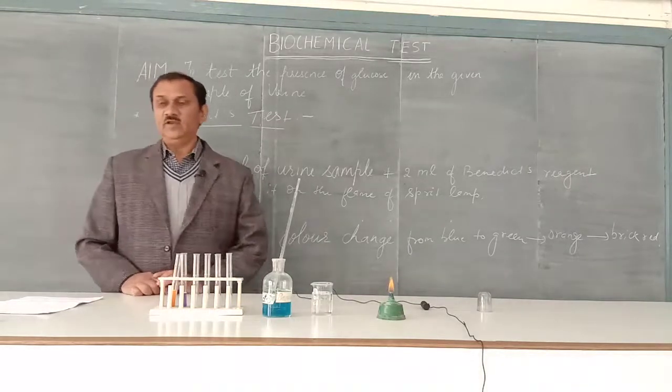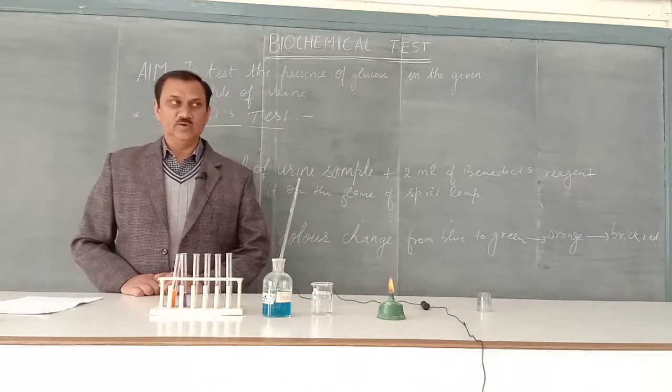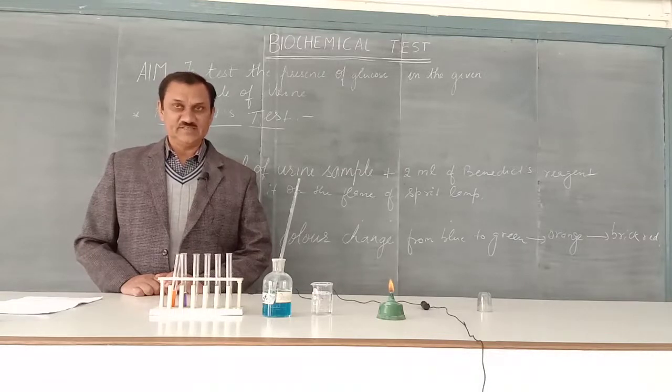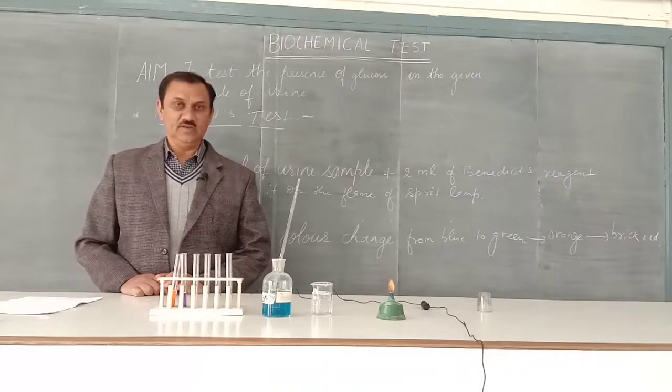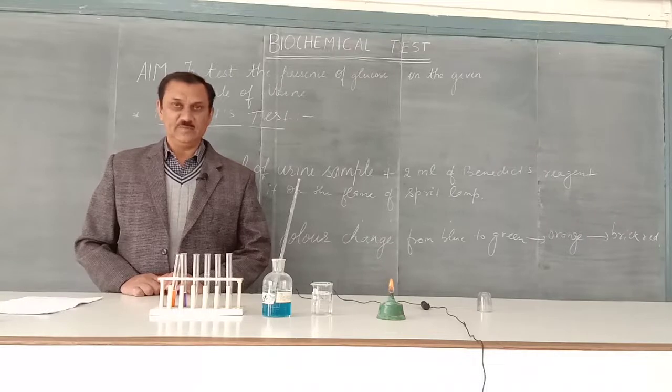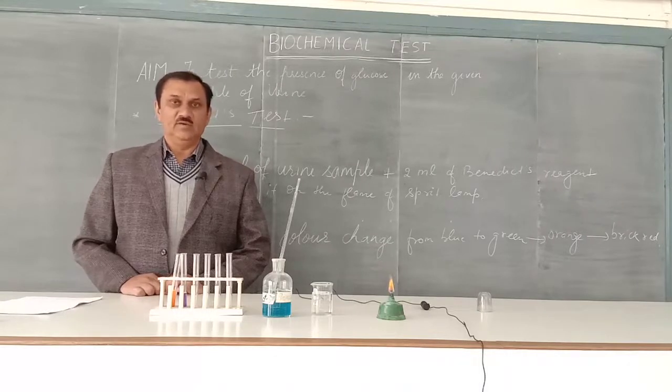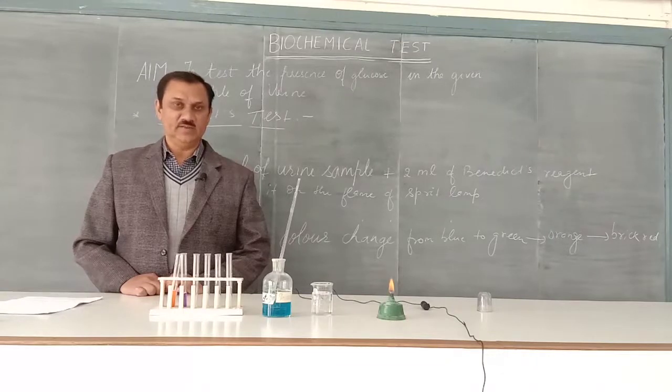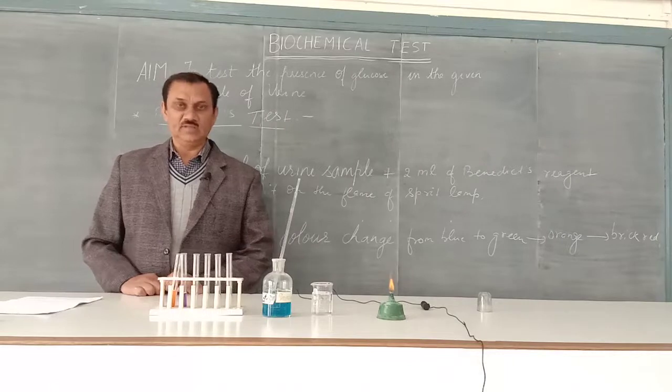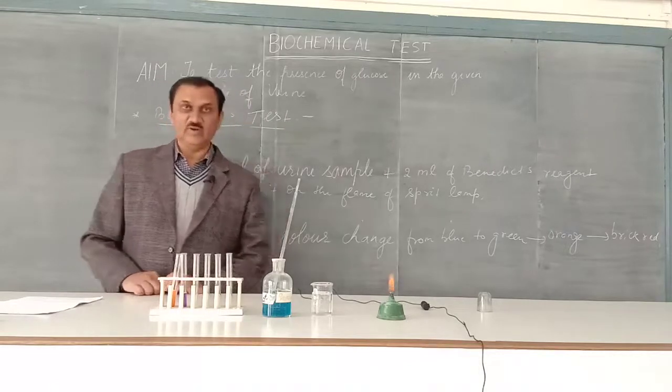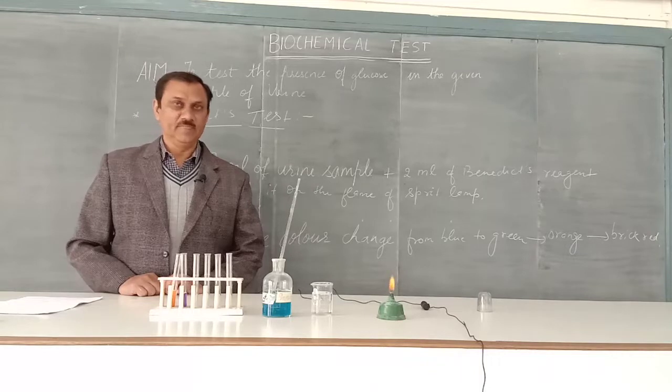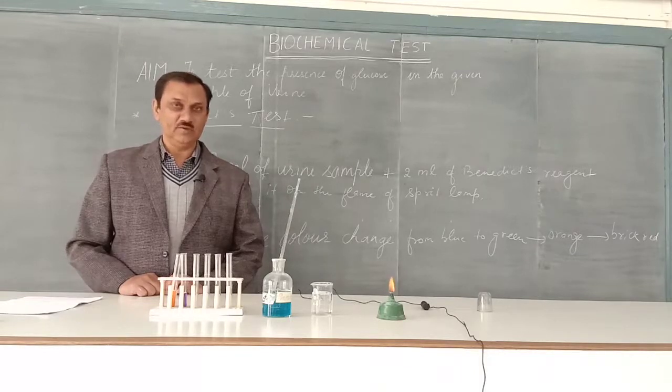Normally, in normal human beings, sugar is absent in urine. The presence of glucose in urine indicates a metabolic disorder like diabetes mellitus. In diabetes mellitus, sugar increases in the blood, and when the sugar level exceeds 180 mg per 100 ml of blood, sugar starts appearing in the urine.